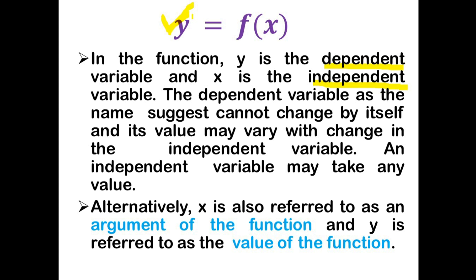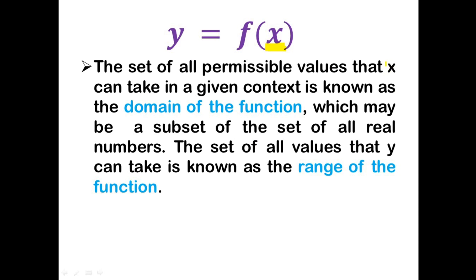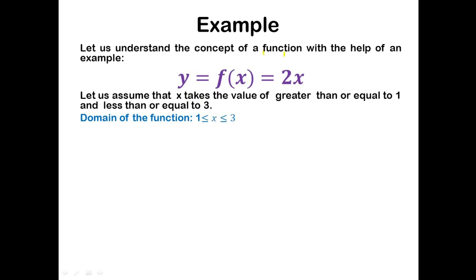The dependent variable, as the name suggests, cannot change by itself and its value may vary with a change in the independent variable. An independent variable however may take any value. The independent variable x is also referred to as an argument of the function, and the dependent variable y is also referred to as the value of the function. The set of all permissible values that x can take in a given context is known as the domain of the function, which may be a subset of the set of all real numbers. The set of all values that y can take is known as the range of the function.